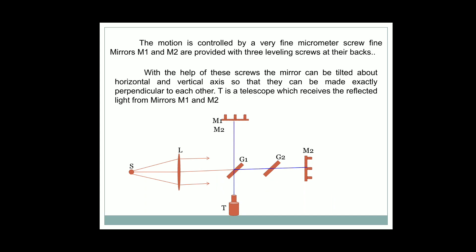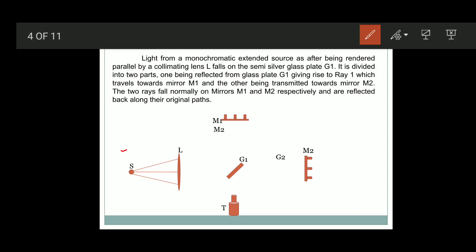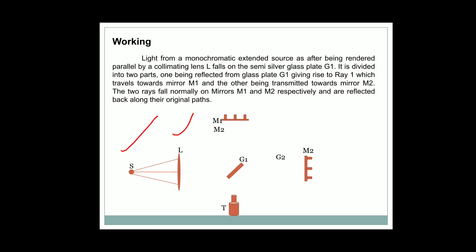Now, how does this experiment work? There is a convex lens L and a source of light S. G1 is the semi-silverized glass plate towards G2. Mirrors M1 and M2 are perpendicular to each other, and T is the traveling microscope. A ray coming from the source S is incident on the convex lens L, which renders it into a parallel beam incident on the semi-silverized glass plate G1. Due to the semi-silvering, the ray is partially reflected and partially transmitted.